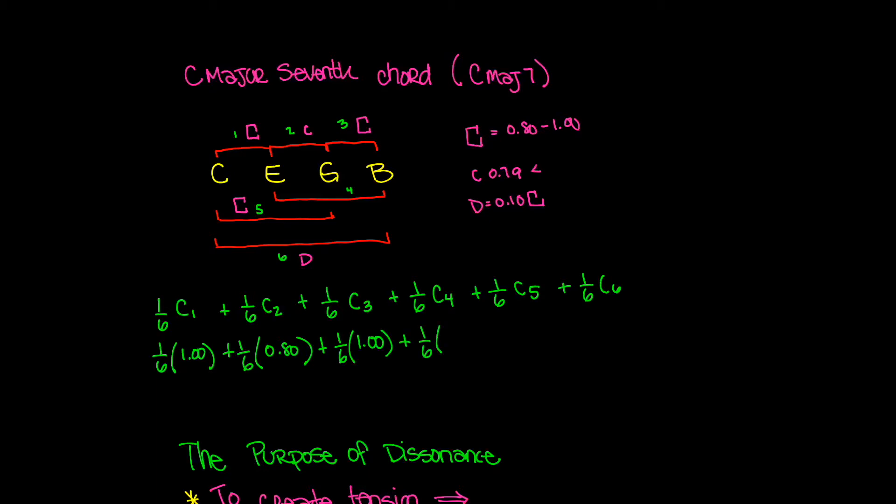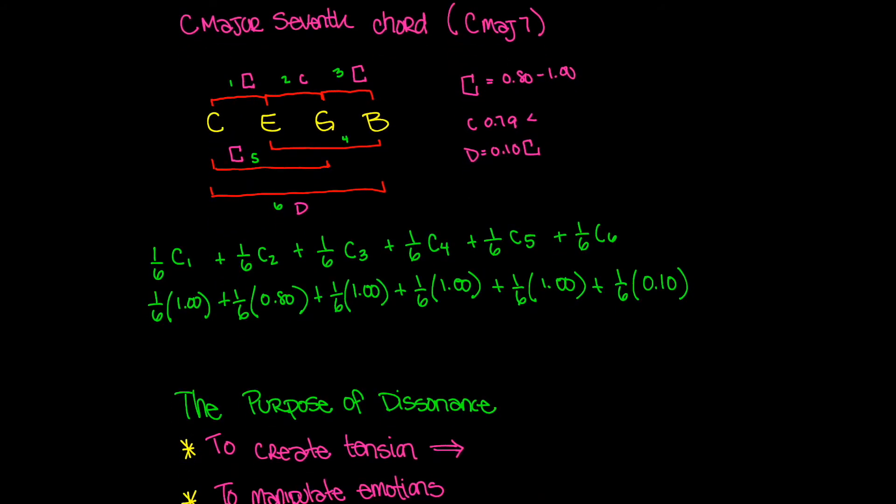And we're going to do one sixth times C4 and C4 is right here, which is a perfect fifth. That's another 100% consonant plus one sixth times C5. C5 is going to be right here from E to B, which is another 100% consonant because it's a perfect fifth plus one sixth times C6 and C6 is right here. And that is the one that's very dissonant. And we're going to say that that's 0.1 consonant. Now, if you were to analyze this whole thing, what you'd find out is that this is going to give you approximately 78% consonant.